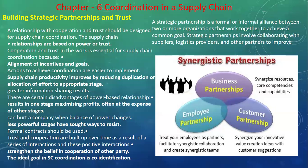There are certain advantages of the power-based relationship. One result is that profit is maximized at one stage — if the supplier, business partner, employees, and customer work together for a single goal, it will result in maximum profit. However, this can hurt a company when the balance of power changes, and the less powerful stage has a sort of way to resist. Formal contracts should be used.